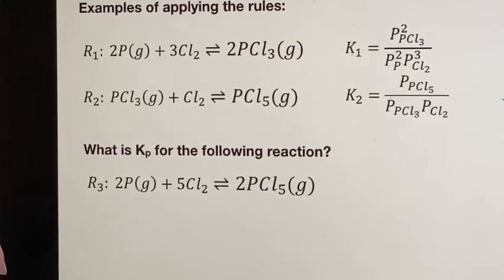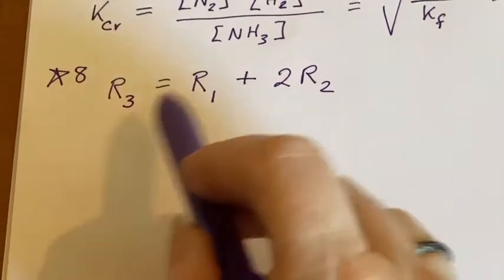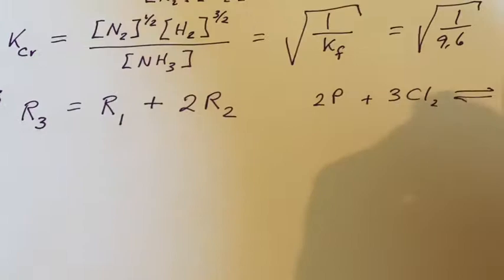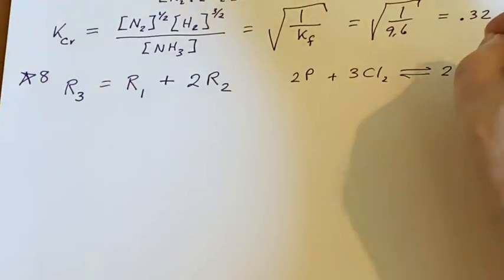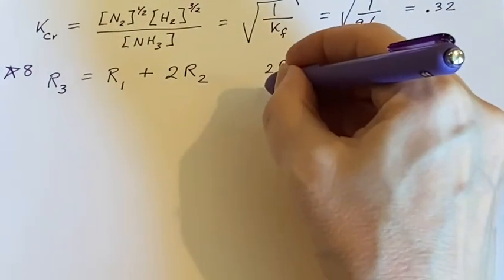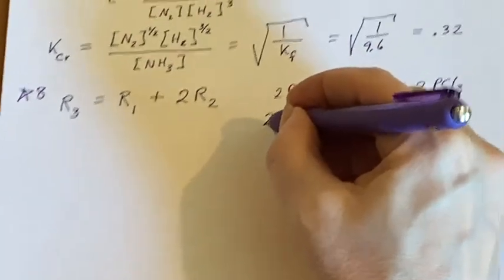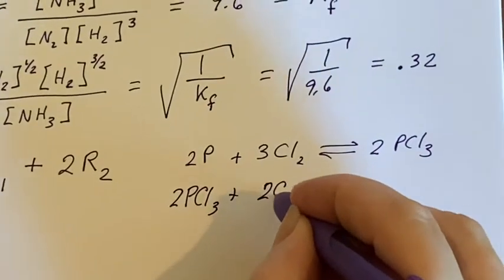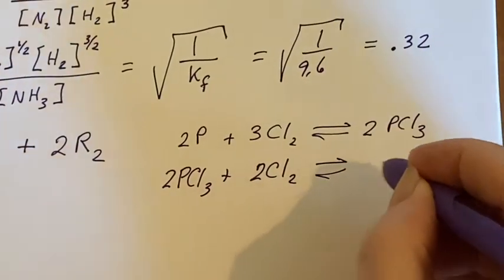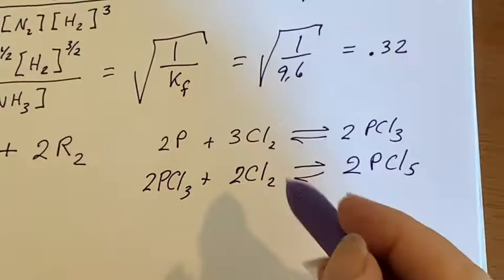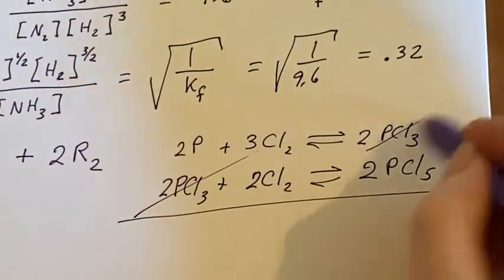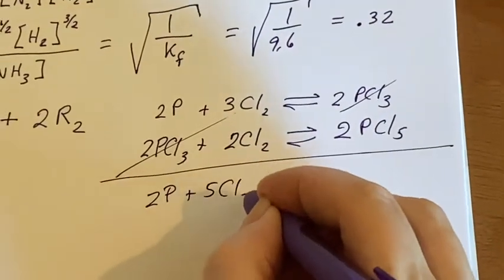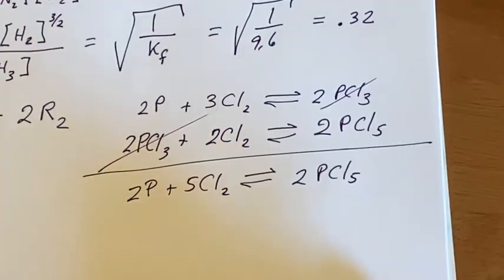Okay, so really what I did to make reaction number three, I have reaction one and I added two of the second reaction. So I doubled it by saying this and doubling this and doubling this. And then I can sum it up, this cancels out and I'll have two of the phosphorus, five of the chlorines and I'll end up with two of the phosphorus pentachlorides.